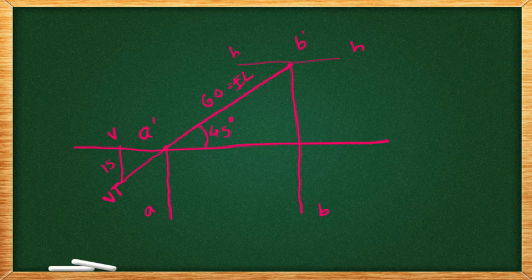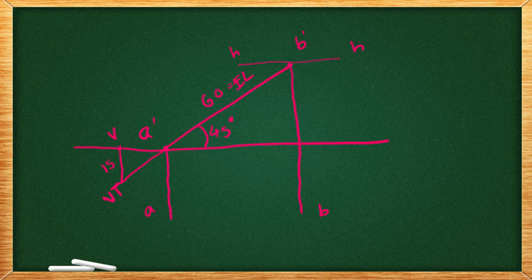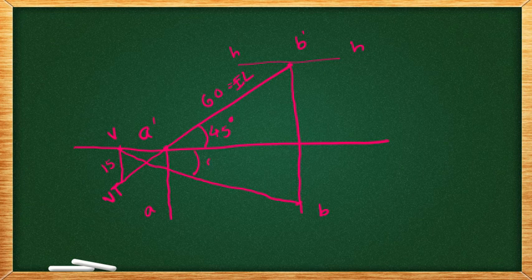We are taking 30 degree inclination from v. We are extending the inclination towards that line. So, it will meet the point b at here. We have this angle theta is equal to 30 degree.